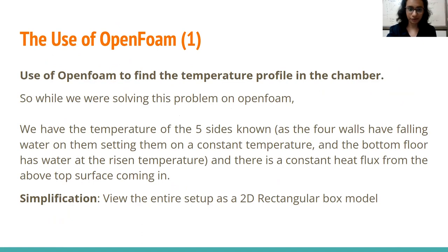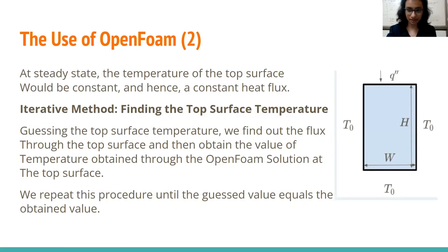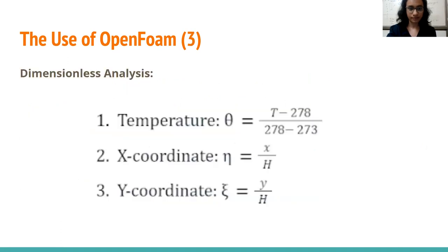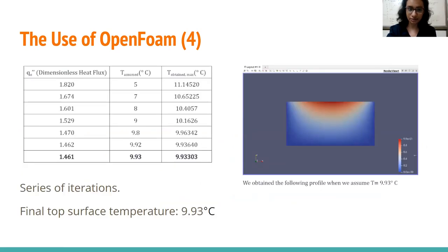Now this is about the use of OpenFOAM. We are basically using OpenFOAM to find the temperature profile in the chamber. We know the boundary conditions of our chamber. We have kept temperature of five sides as a constant temperature and there is a constant heat flux coming in from the top surface. We have simplified our 3D model as a 2D model since we were able to solve it on OpenFOAM easily. We have then practiced an iterative procedure to find the top surface temperature. With the given boundary conditions, we have guessed the top surface temperature, found out the flux through it and then obtained another value of temperature corresponding to the flux. We have kept on doing this until our guessed value and actual value have converged. This was the dimensionless analysis done in which the temperature, dimensionless temperature, dimensionless x coordinate and dimensionless y coordinate were written as follows. This is the table of iteration and convergence of the T assumed and the T obtained. We stopped once we got close convergence up to two decimal points. We've taken the final top surface temperature as 9.93 degree Celsius.